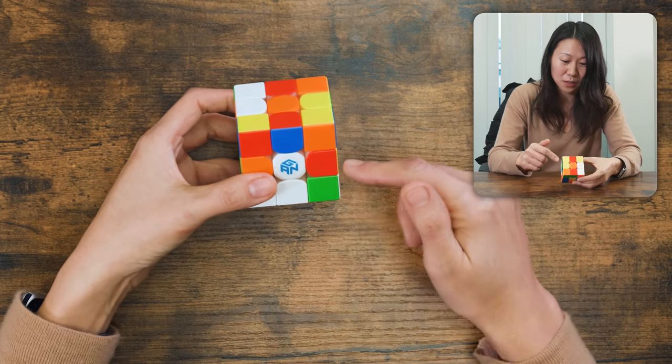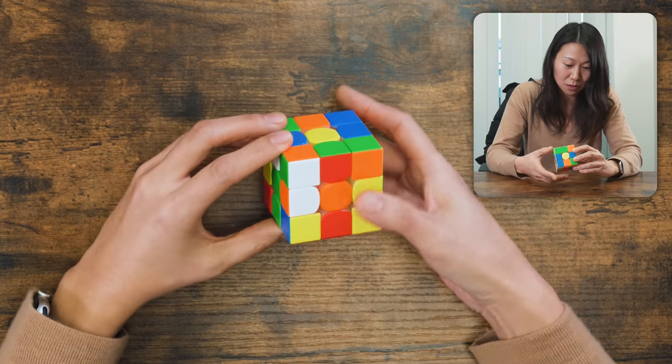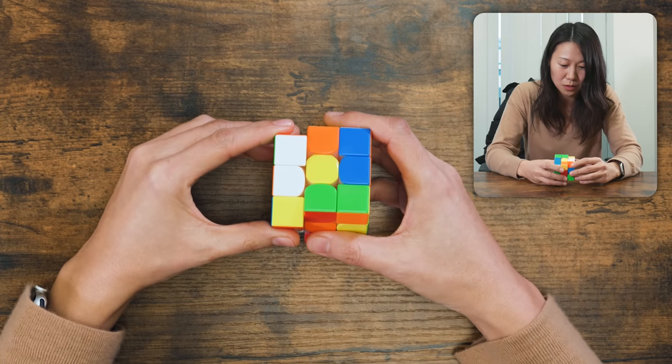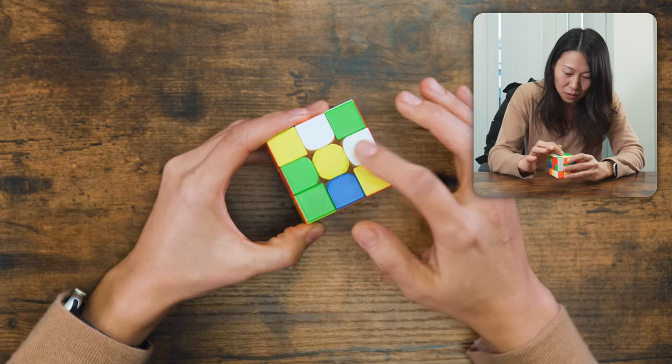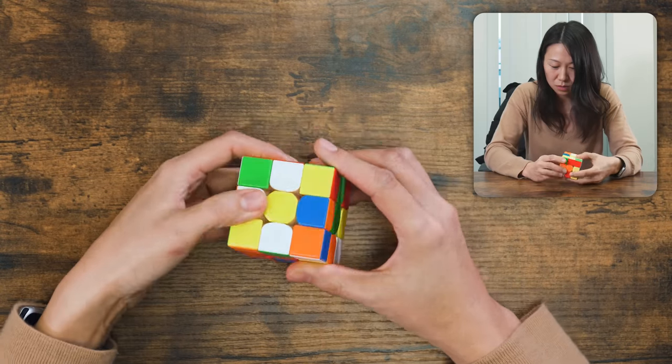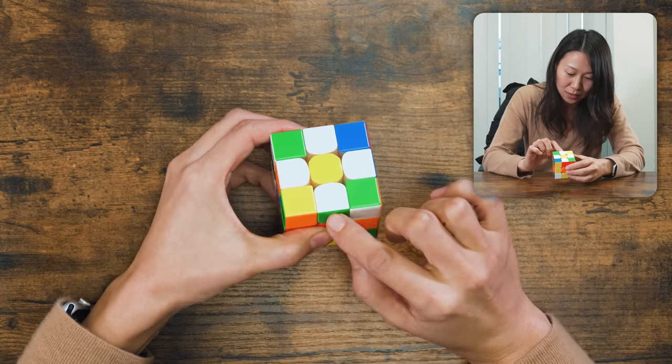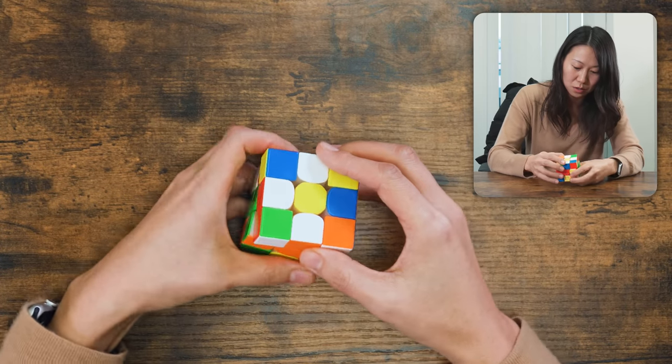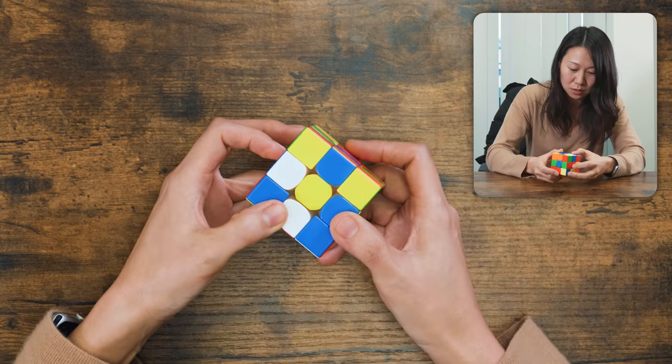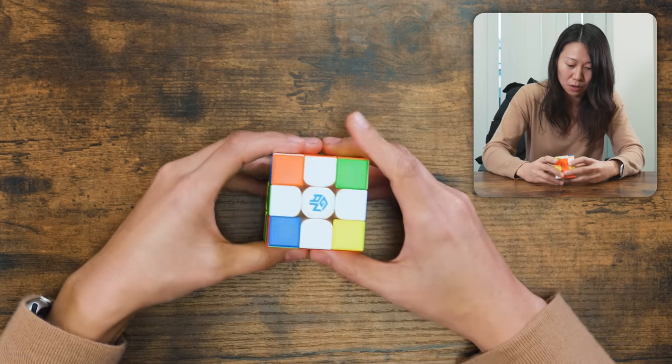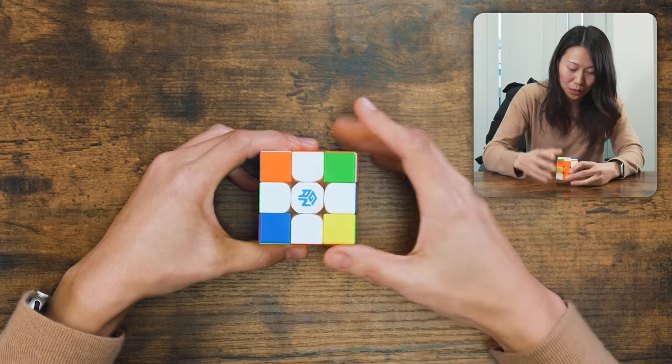So I'm going to solve the cross, the white cross first. In order to do that, I will move the white, move them around the yellow. So once I move all the white here, I will find the color on the other side. Orange goes with orange and turn it twice. And then now I found a white cross.